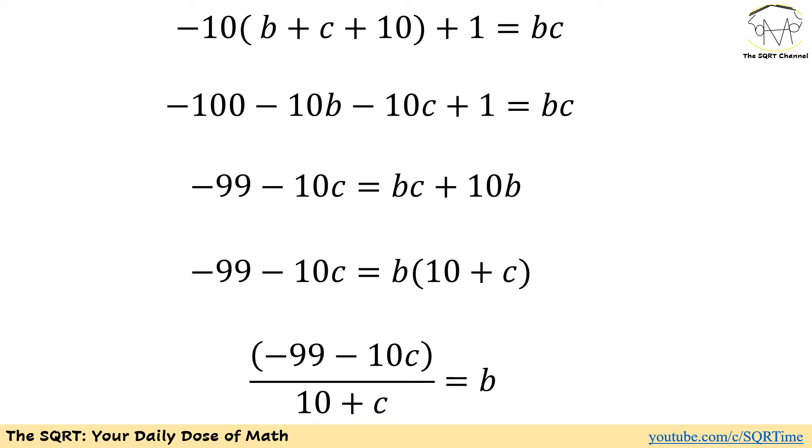I'm going to try to find the value of b based on the value of c. To do this, I apply some simplification. We're going to have -100 - 10b - 10c + 1 = bc. After a rearrangement, I'm going to have -99 - 10c = bc + 10b. Now let's factor out b and then divide both sides by the value that we have as 10 + c. We're going to end up with (-99 - 10c)/(10 + c).